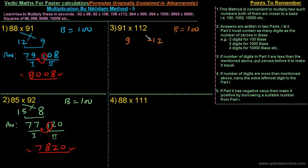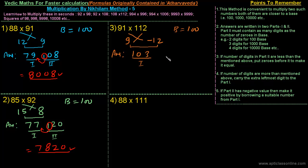When numbers are more than 100, subtracting 112 from 100 gives minus 12. The first part of the answer is the difference of 91 and minus 12, or 112 and 9, which is 103. The second part is the multiplication of 9 and minus 12, that is minus 108.